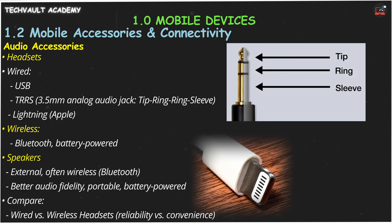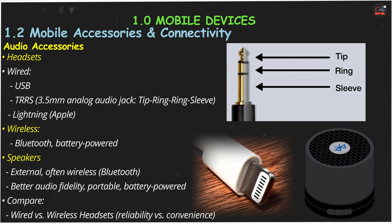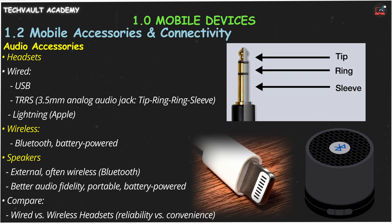Wireless headsets, usually Bluetooth, offer freedom but need charging. Speakers, especially external wireless ones, give you much better sound than tiny built-in phone speakers. They're usually portable, battery-powered, and connect via Bluetooth. Wired headsets offer plug-and-play reliability, while wireless offers convenience. External speakers are all about better audio on the go.